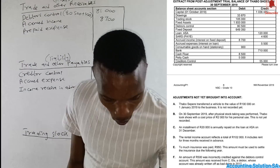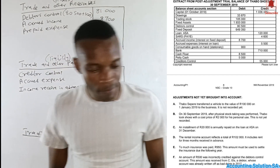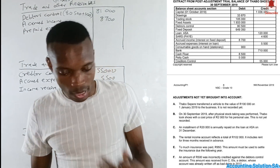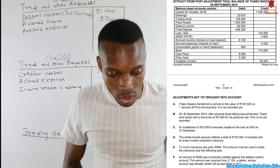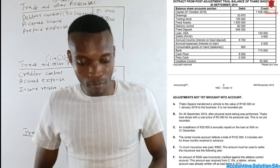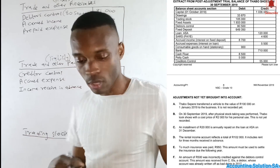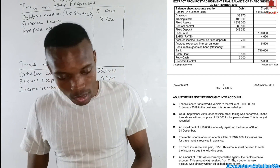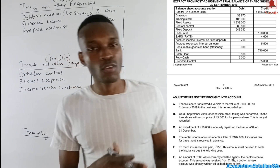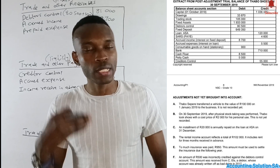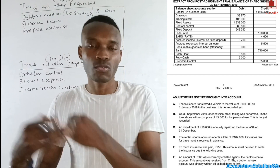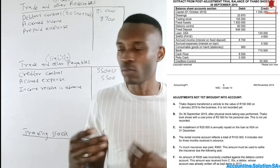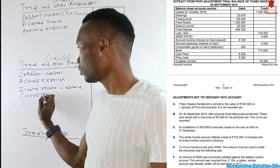Checking the adjustments: number A involves a vehicle transfer of 100,000 — this affects non-current assets (PPE) and does not affect these notes. Number B relates to closing stock, which we'll handle in the trading stock note. Number C states an installment of 3,000 is due on the loan at SARS on 31 December. This current portion of the loan must be added to trading other payables.